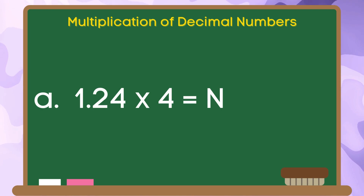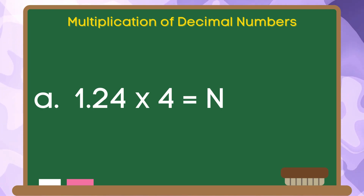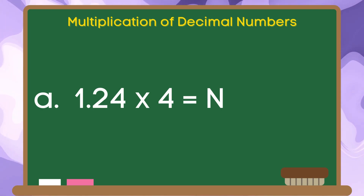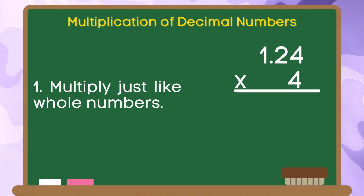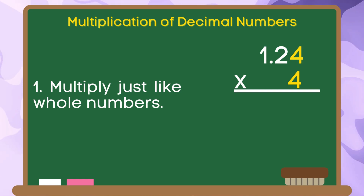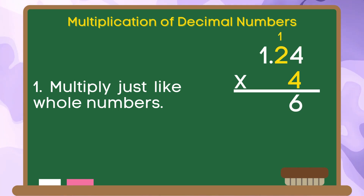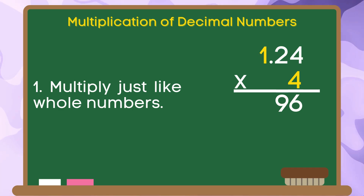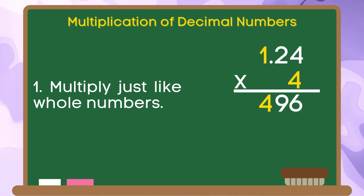Let us find the product of 1 and 24 hundredths and 4. Let us do step 1: multiply just like whole numbers. 4 times 4 is equal to 16. Bring down 6, carry 1. 4 times 2 is equal to 8, plus 1 is equal to 9. 4 times 1 is equal to 4.